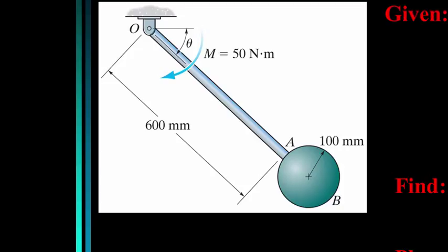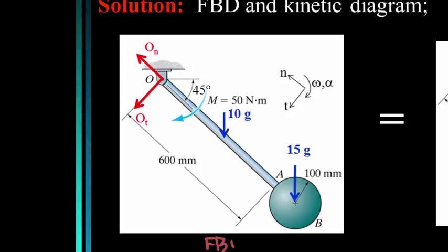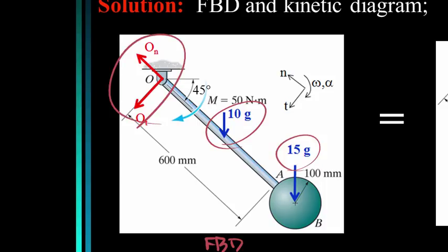Here's another problem. We have a sphere with mass 15 kg and a rod with mass 10 kg forming a pendulum, with an angular velocity of 3 rad/s when theta equals 45 degrees. There is also an externally applied moment of 50 N·m clockwise. Find the reaction at pin O when theta equals 45 degrees. We'll draw the free body diagram and kinetic diagram of the rod and sphere as one unit, using a normal and tangential coordinate system.